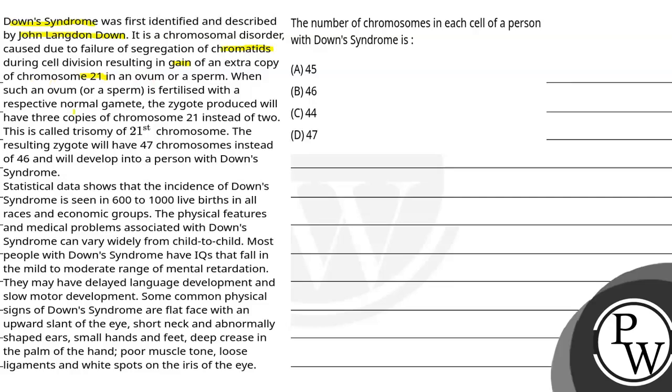When such an ovum or sperm is fertilized with a respective normal gamete, the zygote produced will have three copies of chromosome 21 instead of two. This is called trisomy of 21st chromosome. The resulting zygote will have 47 chromosomes instead of 46 and will develop into a person with Down syndrome.